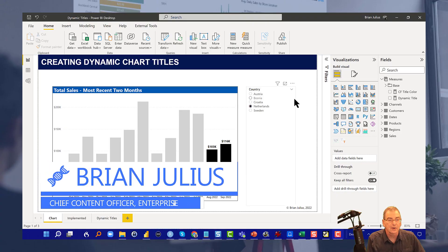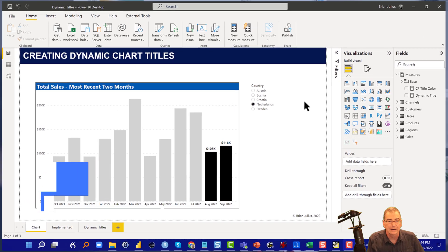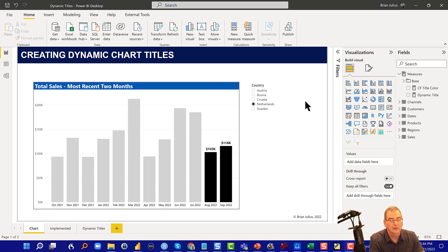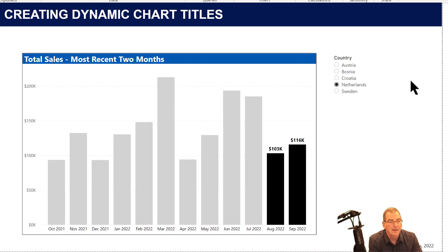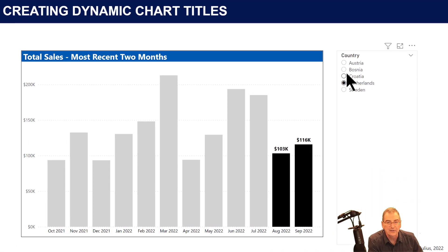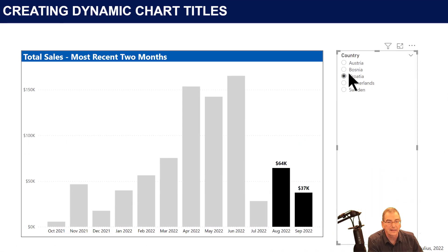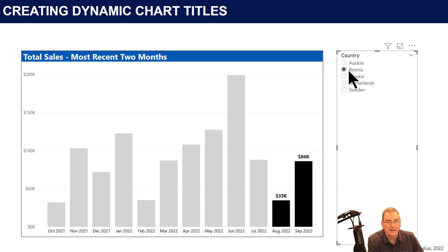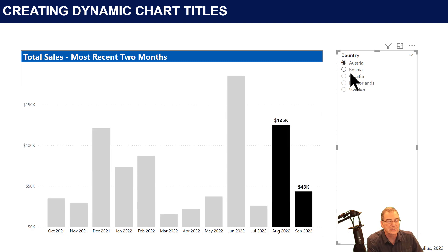Hey everybody, wanted to do a quick video tonight on a question that came up at an accelerator course that Sam McKay and I did last week. We had a visual looking at total sales, and one of the questions somebody in the course had was: could we take the selections from a slicer and incorporate that into the title?